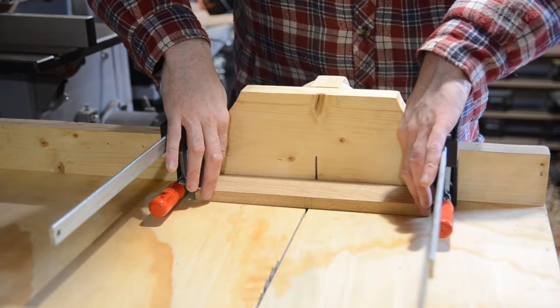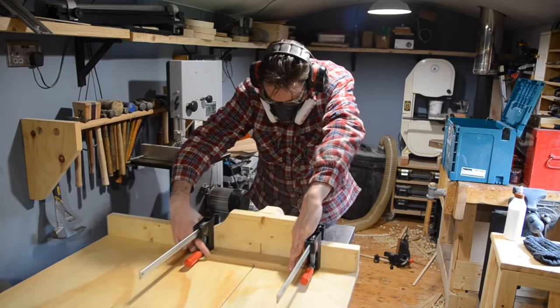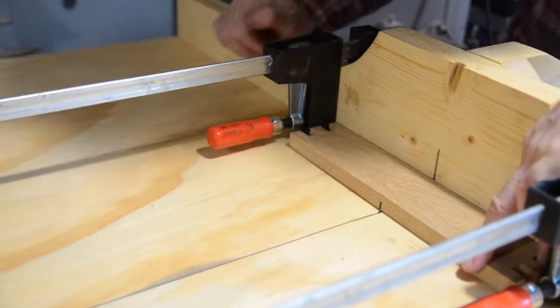I set up a couple of stops on the cross cut sled, and this is going to allow me to cut a groove. This is going to accept a shelf, and I'm going to use one of those re-sawed bits of wood I had left over.